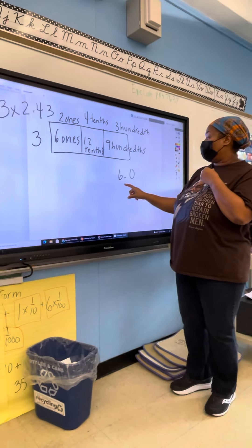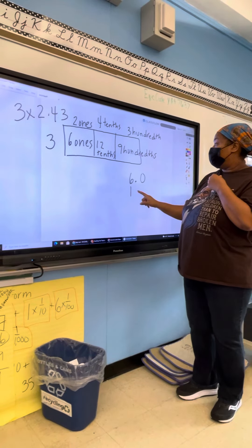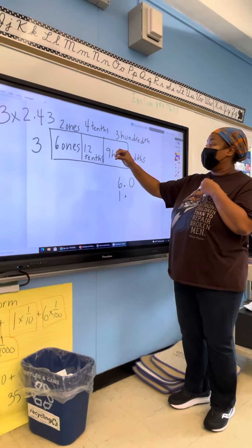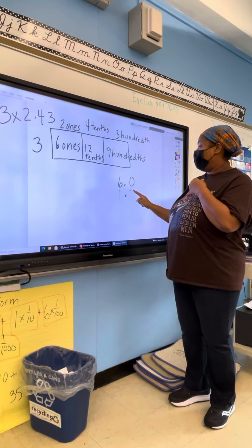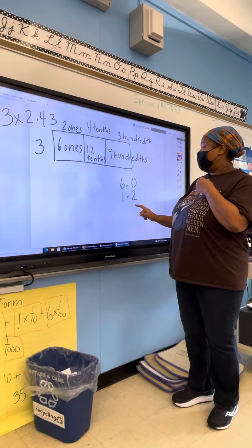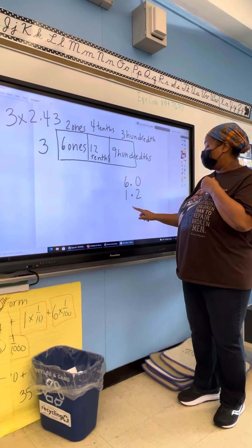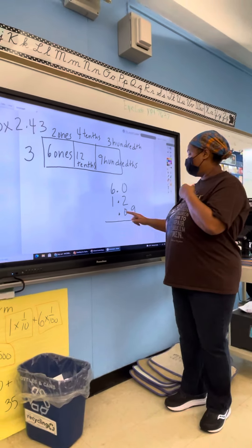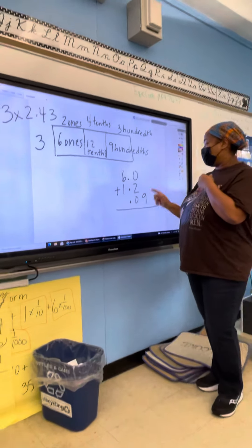I'm going to put 1 in the ones place because 10 tenths equals 1 one. And then 2 tenths are left over. And then I've got 9 hundredths. So that's going to be 0.09.